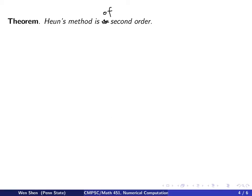Here's a theorem on the Heun's method. It says the method is of second order. Let's see how we can prove it. From the error analysis we did for Taylor series method, we know that in order to show the method is of second order, it's enough to show that local truncation error is of third order. And that's what we're going to show here.